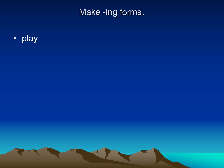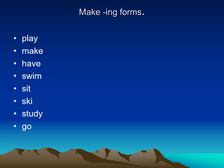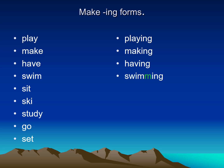What about the ING forms? For example, how can I add ING to these verbs? 'Play' — just add ING. 'Make' becomes 'making' — I have to cross the E first and then write ING. 'Have' — the same, cross the E. 'Swim' — I have M, and before the M I have a vowel, I, so I have to double the M before adding ING. It becomes 'swimming'.